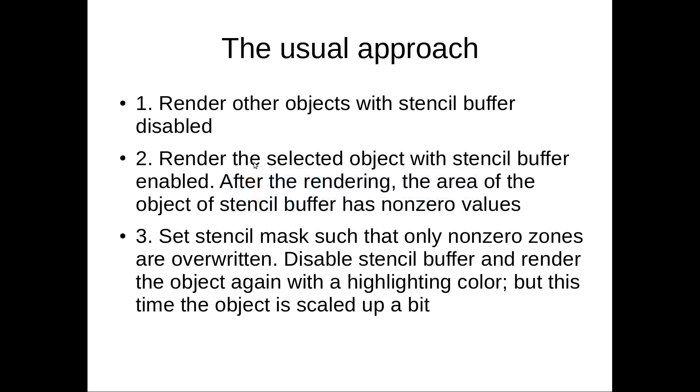So first, I want to show you what is the usual approach of object highlighting. If you are familiar with this, you can skip this section. So normally it has three steps. First, you render objects with the stencil buffer disabled, like this. This is the normal objects.